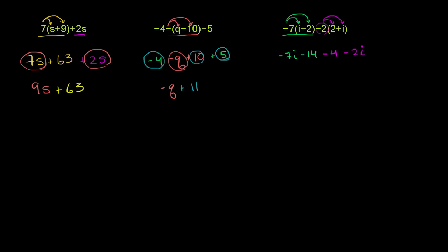And now we can add the i terms. We have negative 7i and negative 2i. Negative 7i minus 2i is negative 9i.